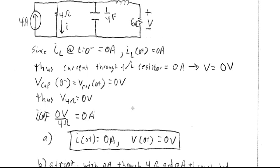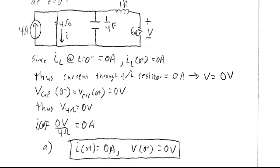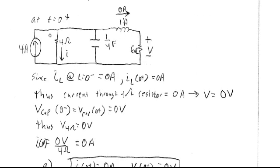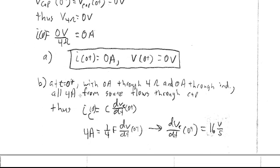Now we need the derivatives dI/dt and dV/dt. At t equals 0+, with 0 amps through the 4 ohm resistor and 0 amps through the inductor, all 4 amps from the current source flow through the capacitor. The capacitor can have an instantaneous change in current — it just cannot have an instantaneous change in voltage — so it steps up immediately to 4 amps.